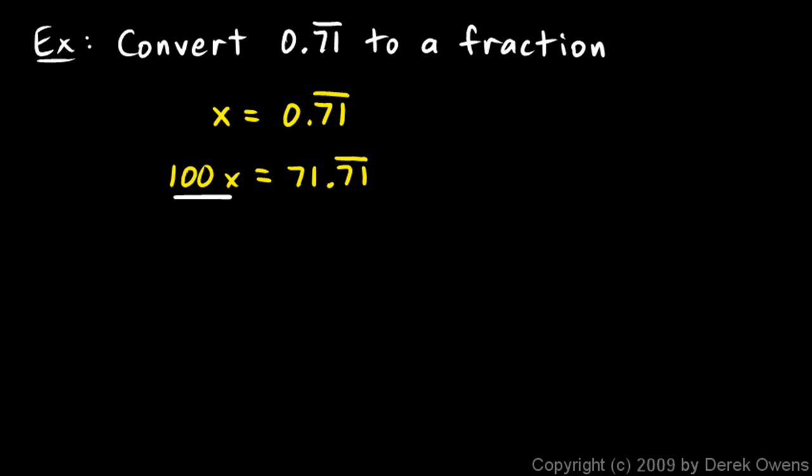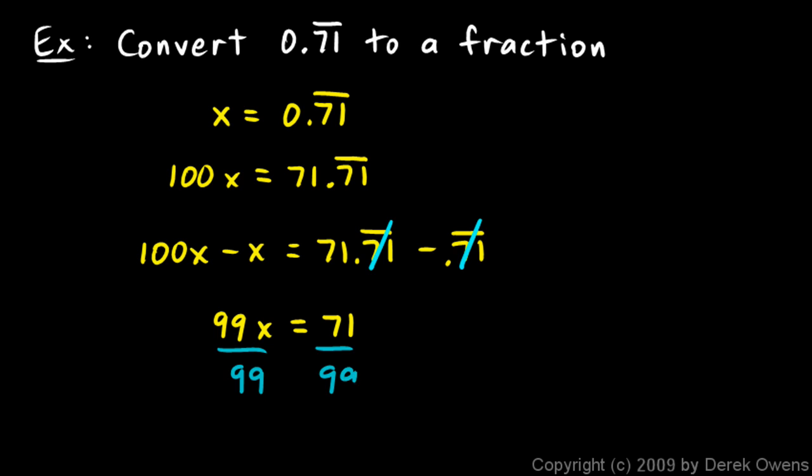Now I'm going to think about 100x minus x is going to have to be this minus that. So let's write that. Let's write 100x minus x equals 71.71 repeating minus 0.71 repeating. You can hopefully see that the 0.71 repeating is going to get subtracted away. I'm left with 100x minus x on the left, which is 99x and 71 on the right. Then I can simply divide both sides by 99. The 99's cancel out on the left, and I'm left with my answer. x is equal to 71 over 99.